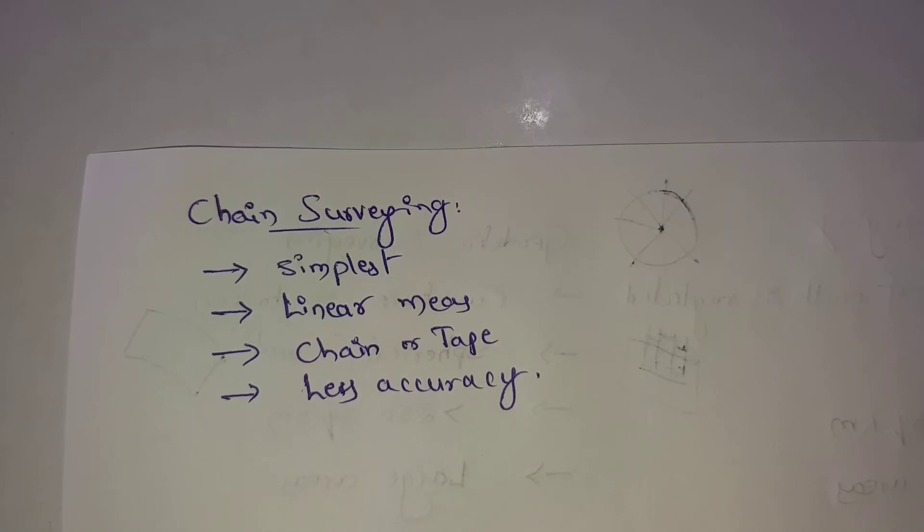In chain surveying, only linear measurements are taken, finding linear measurements like horizontal distances.